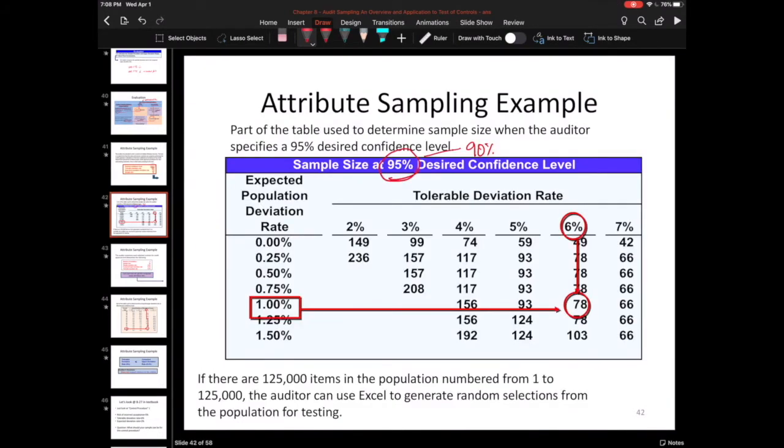So once you figure out if you're using the 90 or 95% table, then you go and you match up your tolerable deviation rate, which again is going to be given to you in some form, and your expected deviation rate, which is going to be given to you in some form. So I have my tolerable, I have my expected, and I match them up to come to my sample size, which in this case is 78.